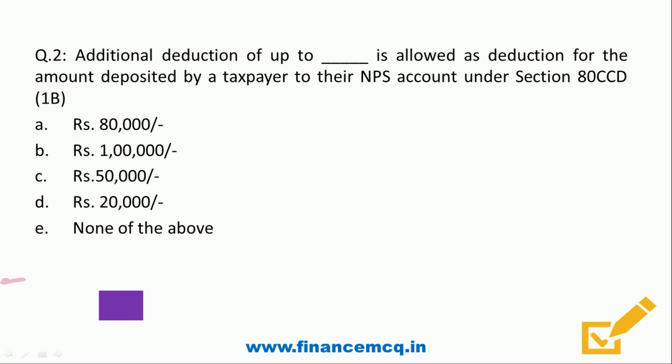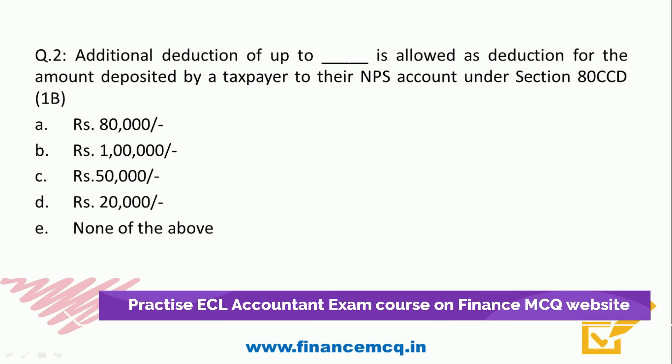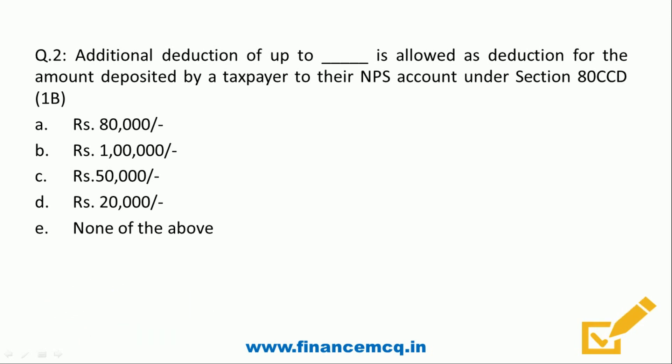Question 2: Additional deduction of up to rupees dash is allowed as deduction for the amount deposited by a taxpayer to their NPS account under Section 80CCD(1B). Options: A) ₹80,000, B) ₹1 lakh, C) ₹50,000, D) ₹20,000, E) None of the above. Can you tell me the correct answer?